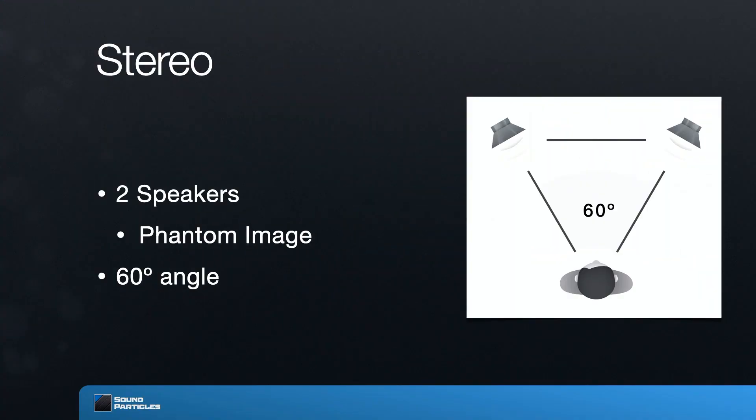When working with stereo, you usually have a 60-degree angle — this perfect triangle between the speakers and you. Why 60 degrees? Well, first of all, we want this angle to be as wide as possible. Of course, if we can have a larger sound image we want to take advantage of that.